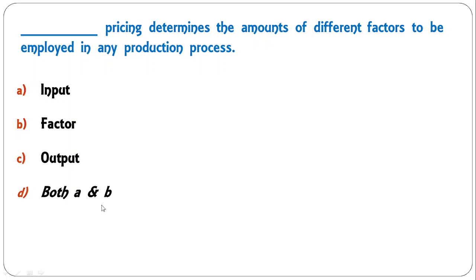Next question: pricing that determines the amount of different factors to be employed in any production process is called — input pricing, factor pricing, output pricing, or both A and B? The correct answer is D — both input pricing and factor pricing are the same thing, and they determine the amount of different factors employed in the production process.